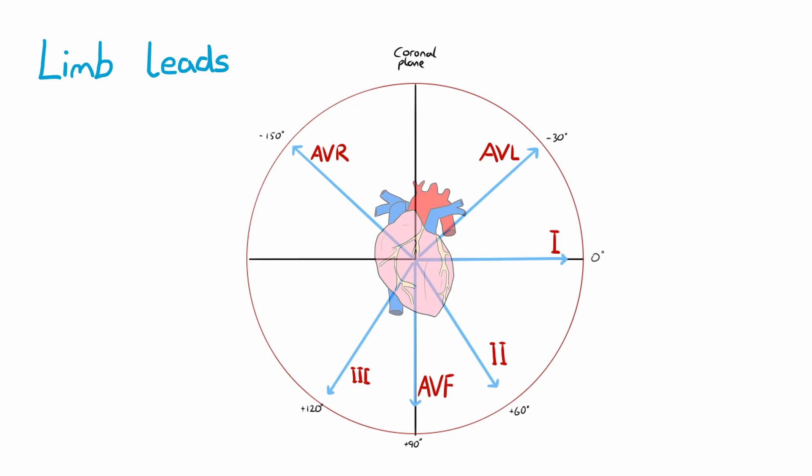This diagram may look complicated at first glance, but don't worry, you don't need to memorize it. It's simply showing how each limb lead looks at the electrical activity of the heart from a different angle, all along the coronal plane.